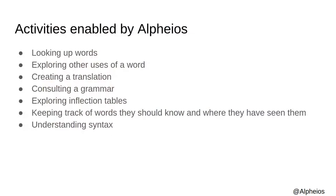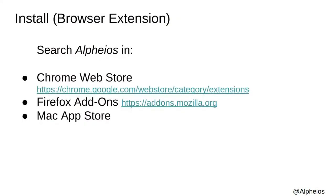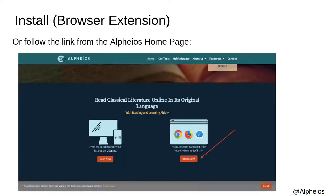As a recap of what we've seen so far, here's what you can do with Alpheus. Reading a text or an assignment, you encounter a word you don't know — you can look it up. From there, you may be offered several options for what the word might be. If you're still not sure, perhaps you will consult the usage examples to see if they provide a better understanding, or for ideas if you need to create a translation. Maybe you will need to consult the grammar to remember what the dative is, or explore the inflection tables to try to memorize the case endings. At any time, you can consult your word list to see where else you might have seen the word. Installing the browser extension is pretty simple. You can search for Alpheus in the Chrome Web Store, the Firefox add-on site, or the Mac App Store, or just follow the link from the Alpheus homepage.